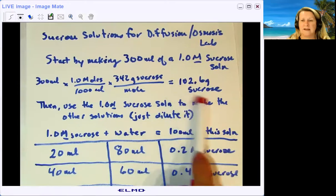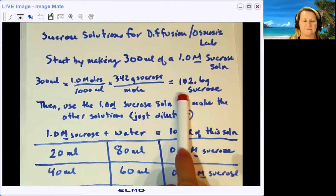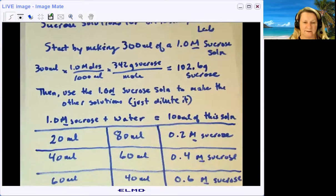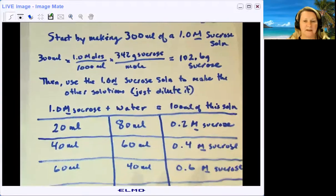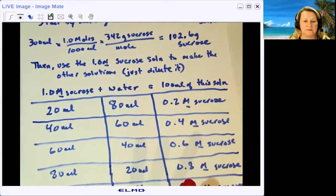I just use table sugar. I get a five pound bag from the grocery store and it lasts forever and it works just fine. Then once I have my sucrose solution made up, I use that one molar sucrose solution to make all the other solutions I need.